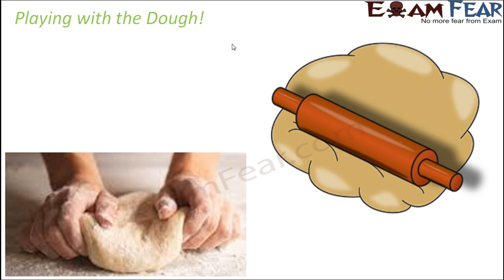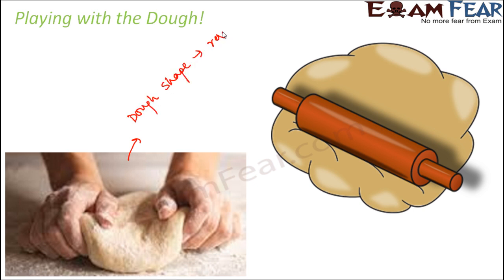Now think of the dough. A very common food in India is roti or chapati, which we prepare from dough. When you look at the shape of the dough, you see that by applying force you can bring about a change in the shape of the dough. This type of change in shape brought about by applying pressure is nothing but a reversible change — so changing the shape of the dough is a reversible change.